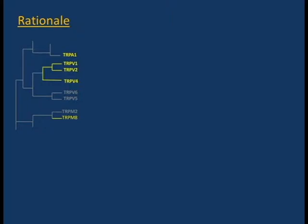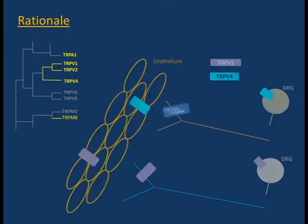Different TRP channels have been found in the urinary bladder. Of these, the most extensively studied are TRPV1 and TRPV4. TRPV1 is expressed in the urothelium and in nociceptive fibers innervating the mucosa and the muscular layers. TRPV1 is known to be essential for bladder pain and hyperactivity during cystitis.